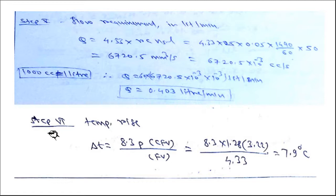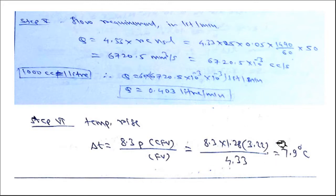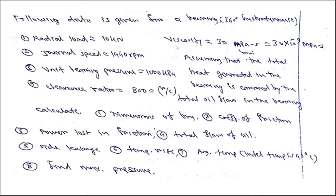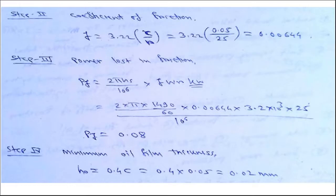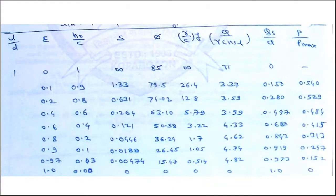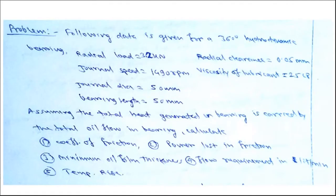The temperature rise is given by ΔT = 8.3 × p × (r/c·f) / (Q/r·c·Ns·L). Substituting the values: r/c·f = 3.22, flow variable = 4.33, and pressure = 1.28 N/mm², we get ΔT = 7.9°C. This completes the solution for the first numerical.